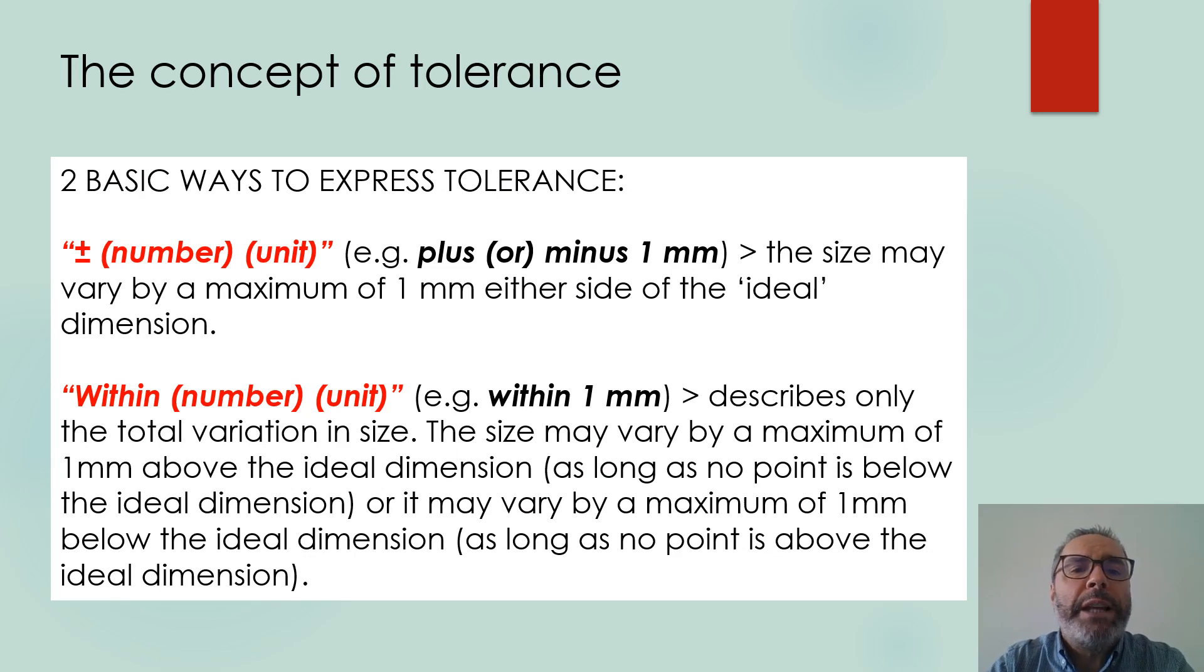There are two basic ways to express tolerance. With a plus minus sign plus the number and the unit. For example, plus minus 1 mm. It means that the size may vary by a maximum of 1 mm at either side of the ideal dimension. So it implies a range.